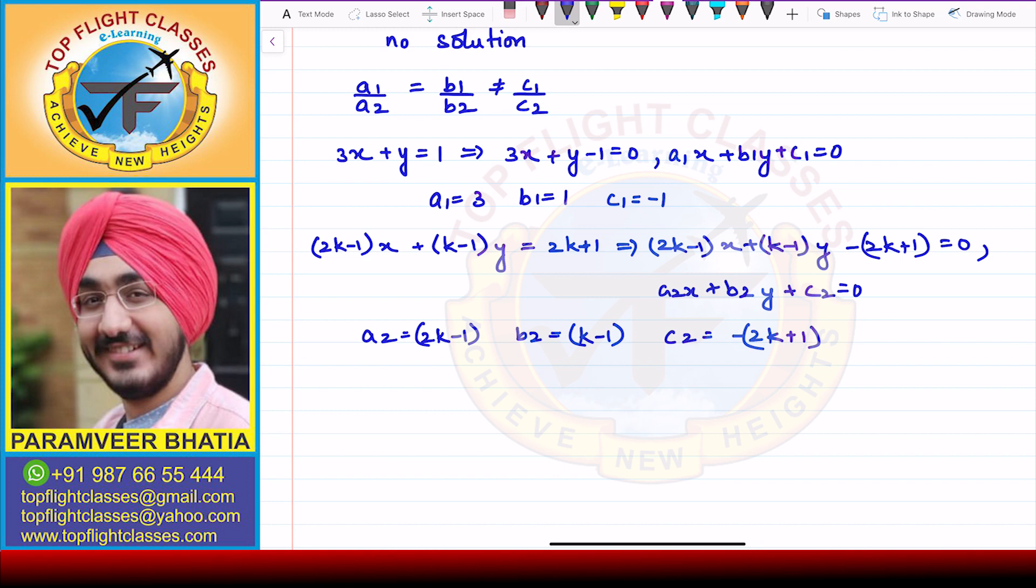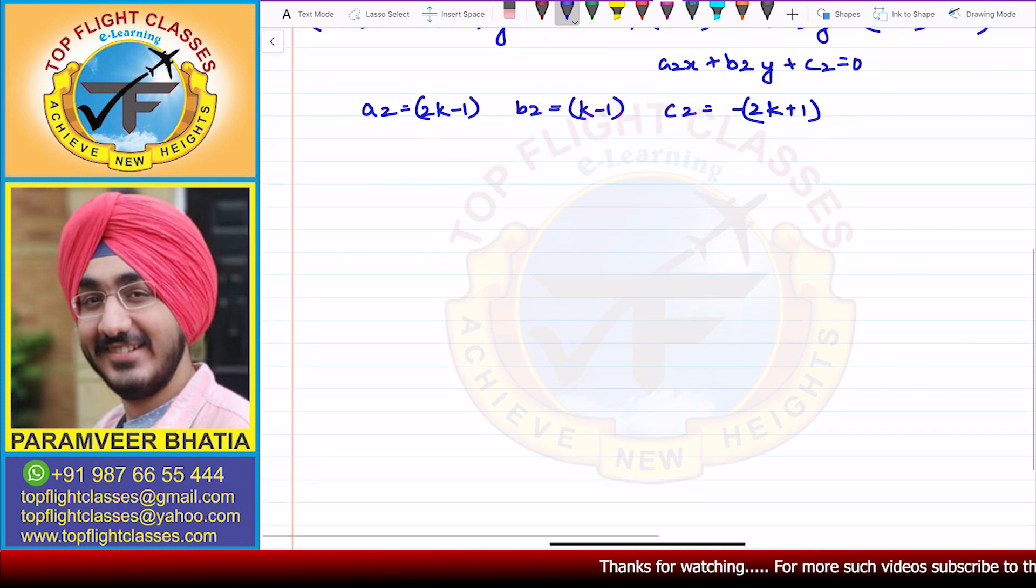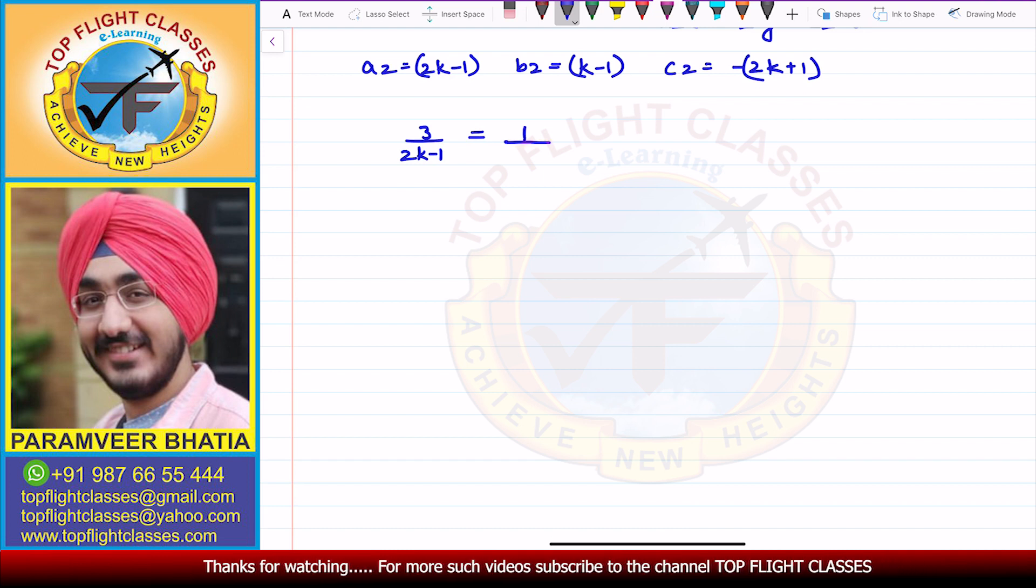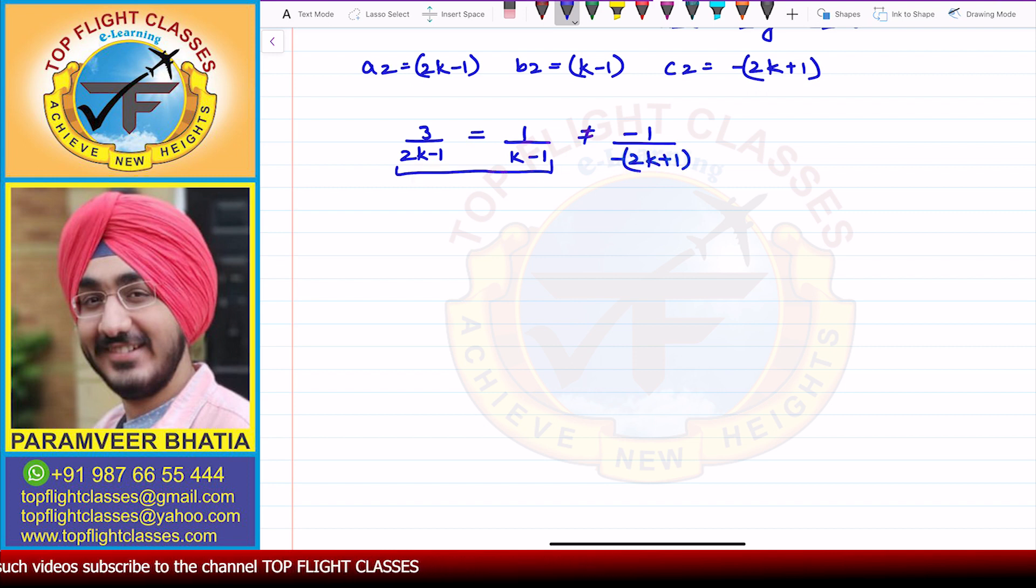So now using that fact, from there I will get that 3 by (2k-1) will be equal to 1 by (k-1) will not be equal to minus 1 by minus (2k+1). So now using these two, from here I will get 3 by (2k-1) is equal to 1 by (k-1).